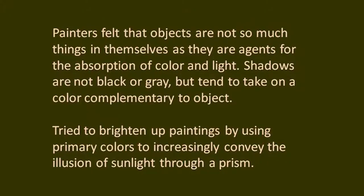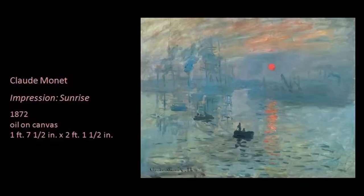And Impressionists were trying to do that precisely, because the Impressionist painters felt that objects are not so much existing in themselves as they are agents for the absorption of colour and light. They probably took this idea from the latest developments in optical science. Shadows are not black or grey, but tend to take on a colour complementary to the object. They tried to brighten up paintings by using primary colours to increasingly convey the illusion of sunlight. As a result, the colour palette and particularly the ranges of tones and colours in Impressionist painting became quite prismatic.